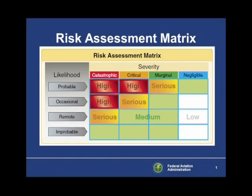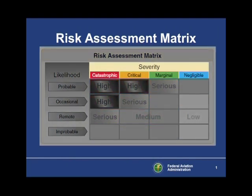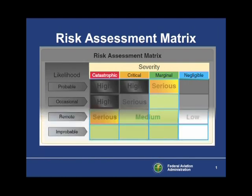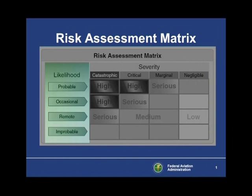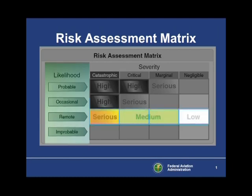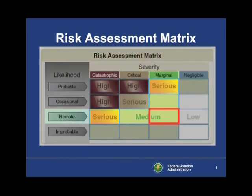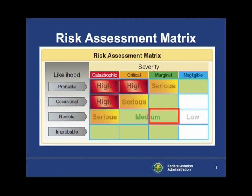One way to quantify risk is to use the risk assessment matrix. Along the top of the matrix is the severity level of the worst possible outcome of an event. For example, landing in a crosswind — if that goes wrong, the results could be severe injury or death, which is catastrophic. On the other hand, having a door pop open in flight might only be marginally dangerous in terms of severity. On the left side of the matrix, we rank the task by the likelihood that the worst possible outcome will actually happen. The likelihood will have a lot to do with a pilot's proficiency and level of training. A well-trained, proficient commercial pilot is less likely to have a crosswind landing mishap than a newly certificated private pilot.